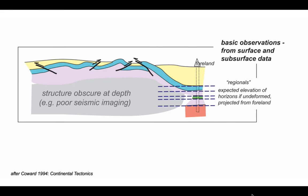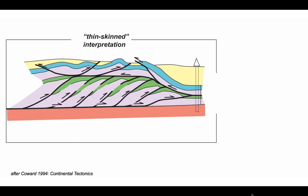If we put in the expected elevations of the foreland horizons — their regionals — the question is how we uplift the rocks, particularly the blue ones, above their regionals. Interpretation one is a very thrusty, thin-skinned version: at depth the basement in red is not deformed; only those younger rocks on top have been stacked up. The deeper structure is a duplex with lots of shortening, the basement is undeformed, and the original stratigraphy was rather thin — uniform fold thicknesses originally regionally extensive, forming a layer-cake stratigraphy.